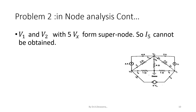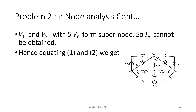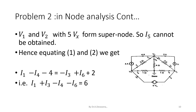V1 and V2 with phi Vx form a supernode. So, the current I suffix phi cannot be obtained. Hence, equating equations 1 and 2, we get I1 minus I4 minus 4 is equal to minus I3 plus I6 plus 2. That is, I1 plus I3 minus I4 minus I6 is equal to 6.